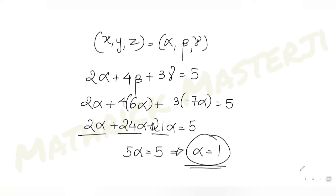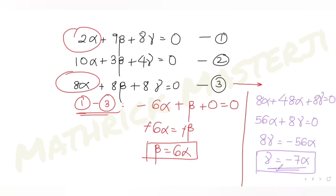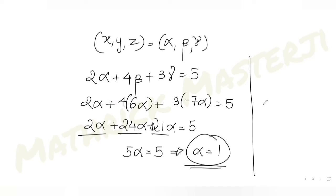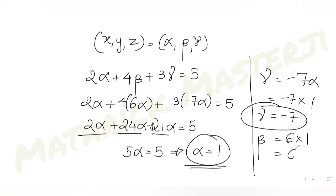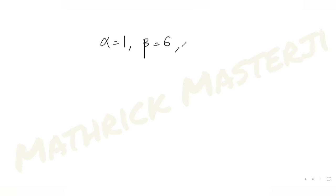With α = 1, I can find the other values. γ = -7α = -7(1) = -7. And β = 6α = 6(1) = 6. So I now have all three values: α = 1, β = 6, γ = -7.